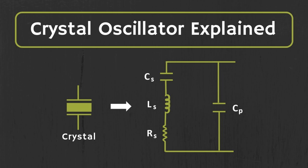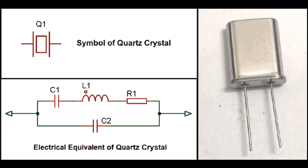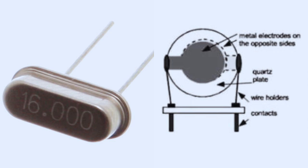The working principle of a crystal oscillator revolves around the piezoelectric effect exhibited by certain crystalline materials, such as quartz. The piezoelectric effect refers to the ability of these materials to generate an electric charge in response to mechanical stress, and vice versa. This effect is observed in materials such as quartz, rochelle salt, and certain ceramics. Conversely, when an electric field is applied to these materials, they undergo mechanical deformation or vibration. This dual property makes them invaluable in various applications, from sensors to actuators to electronic components like crystal oscillators.